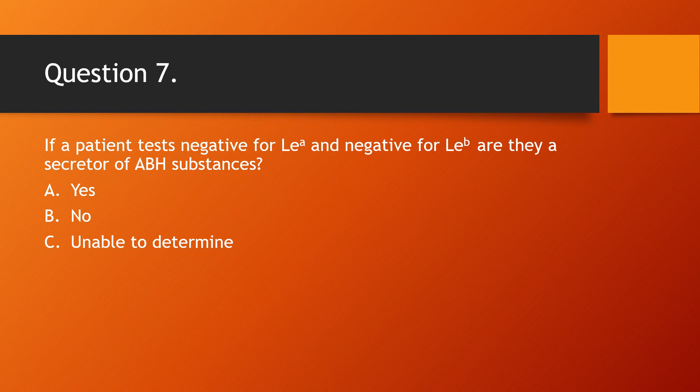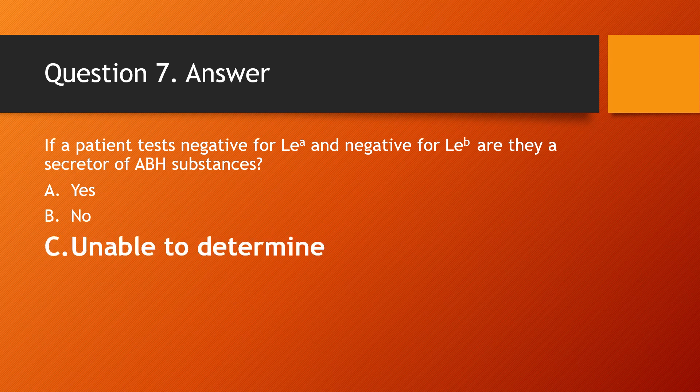Question 7: If a patient tests negative for Lewis A and negative for Lewis B, are they a secretor of ABH substances? Choices: A) yes, B) no, C) unable to determine. The answer is C — we are unable to determine the secretor status of a Lewis A negative B negative individual without further testing.